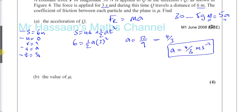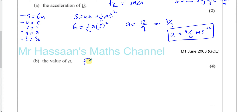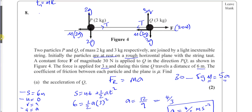Now for part B: find the value of mu. We know F_max = mu R, so mu = F_max / R. If we consider particle P on its own, the resultant force is T minus 2G times mu, but this doesn't directly help us find mu because we'd need the tension. So we have a problem if we consider the particles separately.